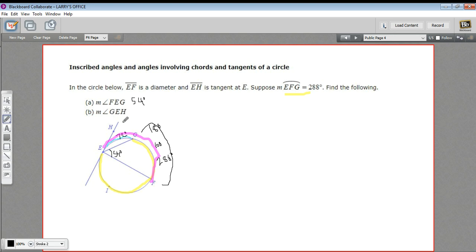Now we want to find angle GEH. That's this one right here between the chord and the tangent. And an angle formed by a chord and a tangent works the same way an inscribed angle does. So the arc that it intercepts here, we just take half of that to get the angle. So half of 72 is 36. So this is going to be 36 degrees. And that is a little bit of work with inscribed angles, chords, and tangents.